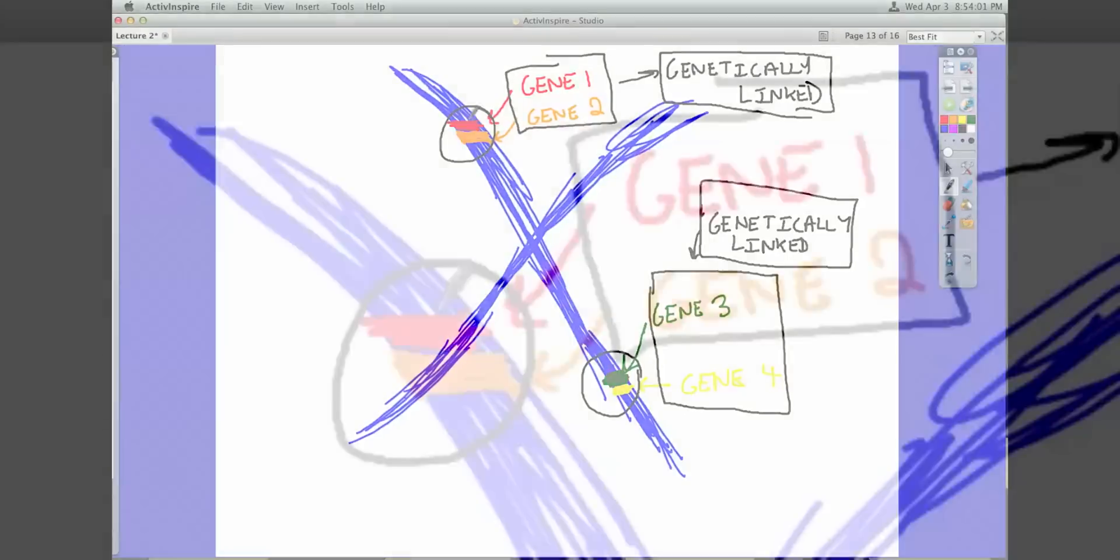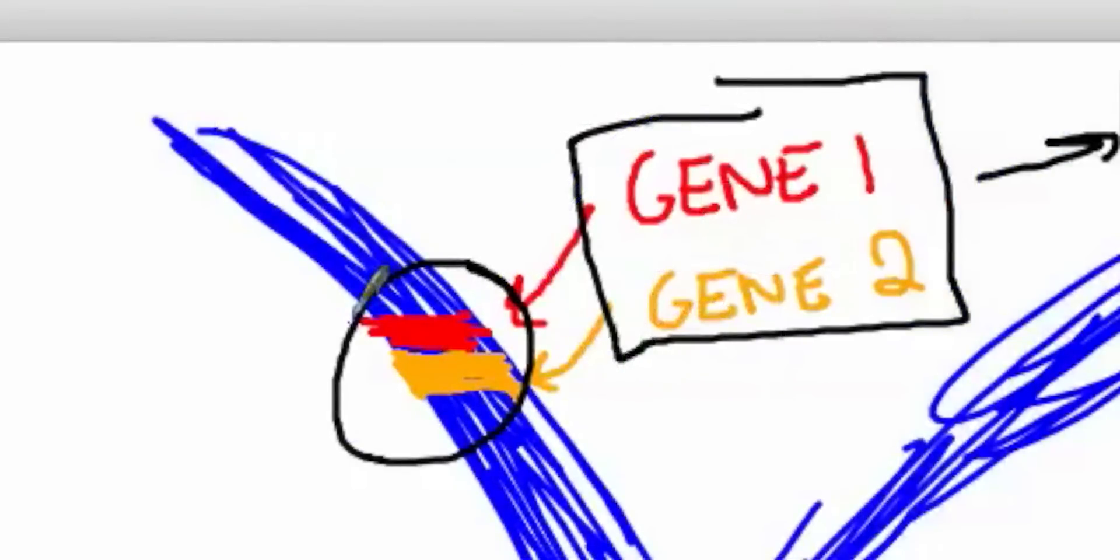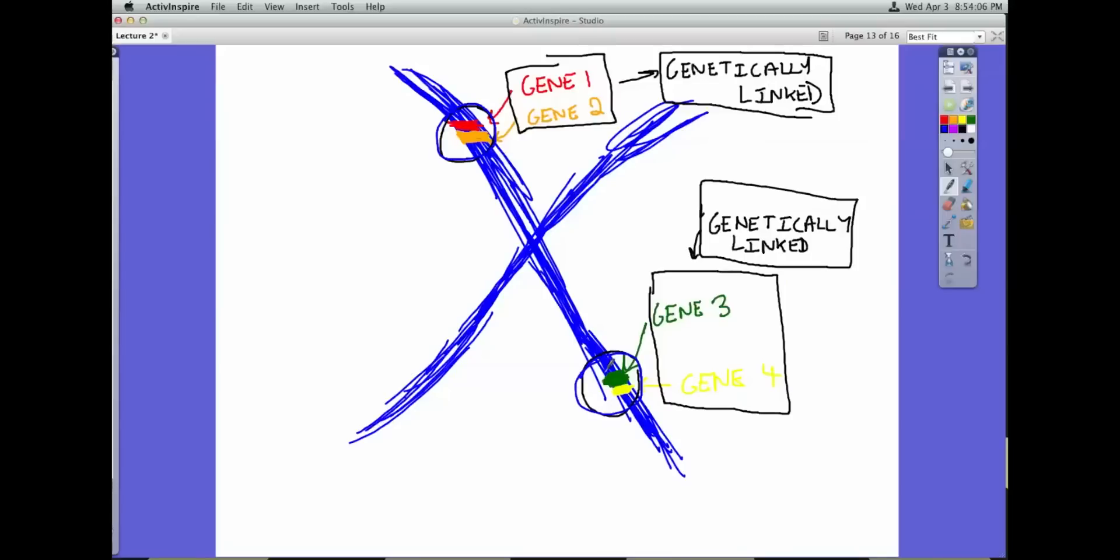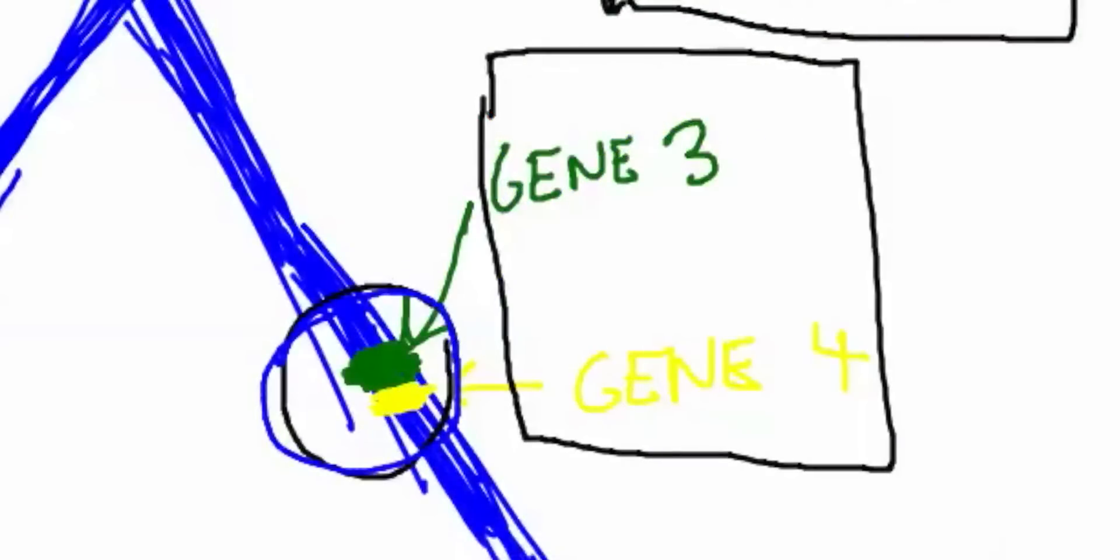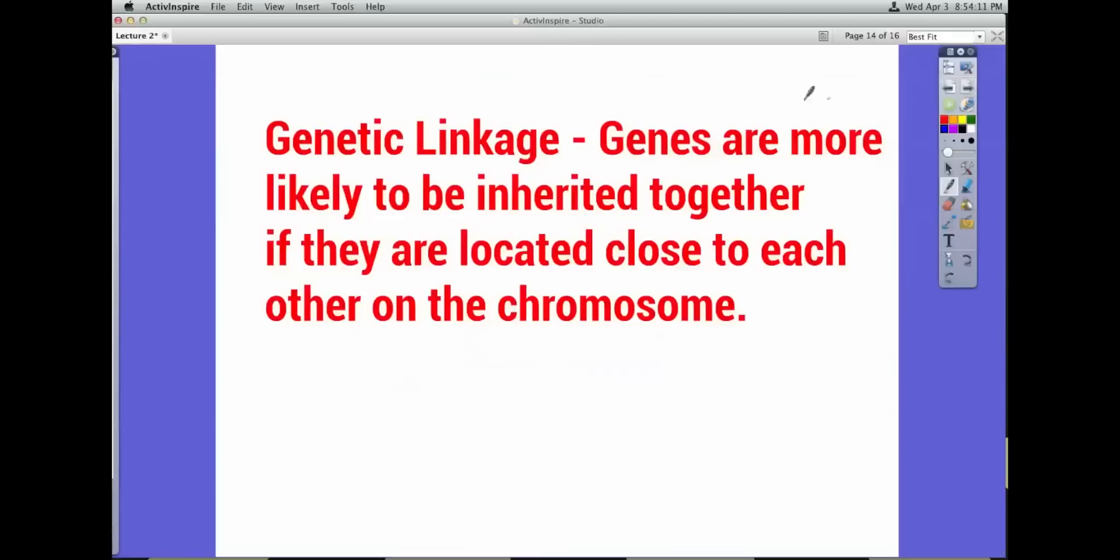Another time where we see interesting things between genes is when genes are close together like this red gene and orange gene or like this green gene and yellow gene. These genes are all close together. This is known as genetic linkage. Genetic linkage is when genes are close together and they're more likely to be inherited together if they're located close to each other.